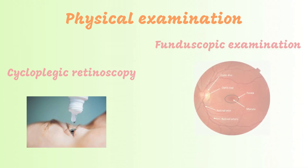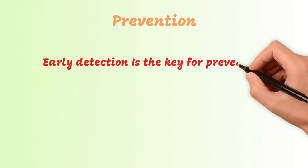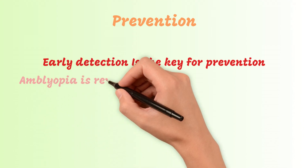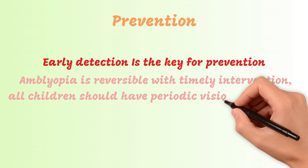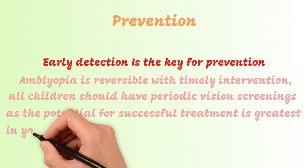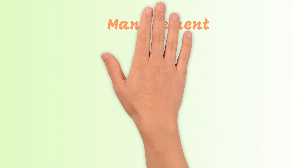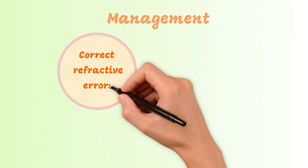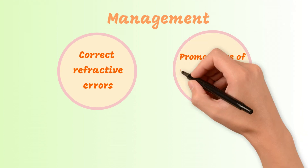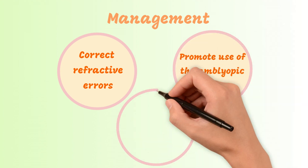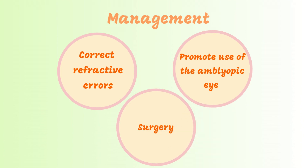Early detection is the key for prevention. Amblyopia is reversible with timely intervention, so all children should have periodic vision screenings, as the potential for successful treatment is greatest in young children. Several strategies are used to improve visual acuity in amblyopia: correct refractive errors likely to cause diminished visual acuity, promote use of the amblyopic eye by occluding the fellow eye, and surgical management to eliminate any obstruction of the visual axis.